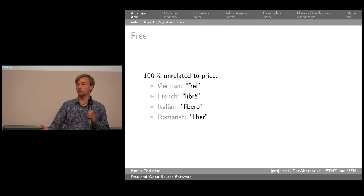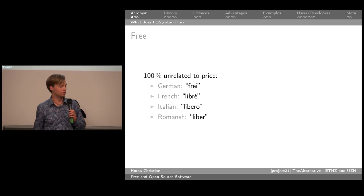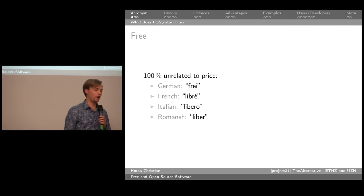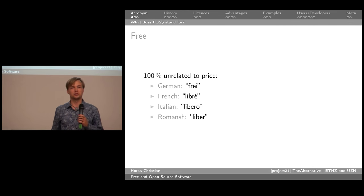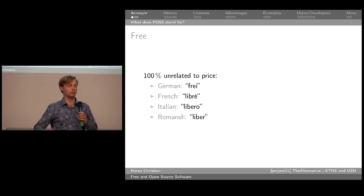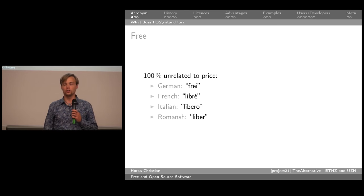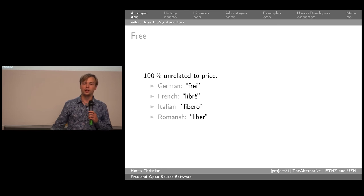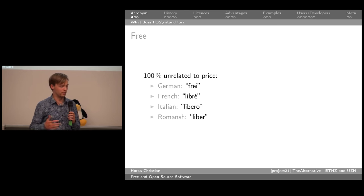The English language doesn't really have a way of specifying that unambiguously — different from 'free' as in without any price. German does, French does, very many other languages do. Here in Switzerland you have four official languages, every single one of which is more apt at describing freedom as a qualifier than English. So if you talk to your friends or parents, you can call it 'frei' software — that way it's clear you're talking about free as in freedom, not free as in free beer.